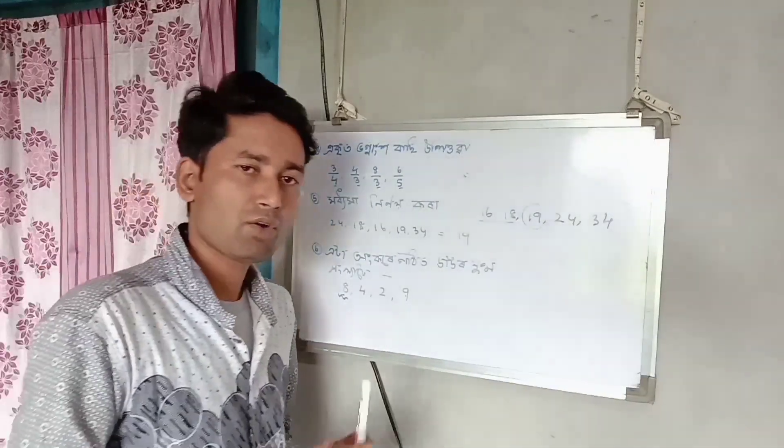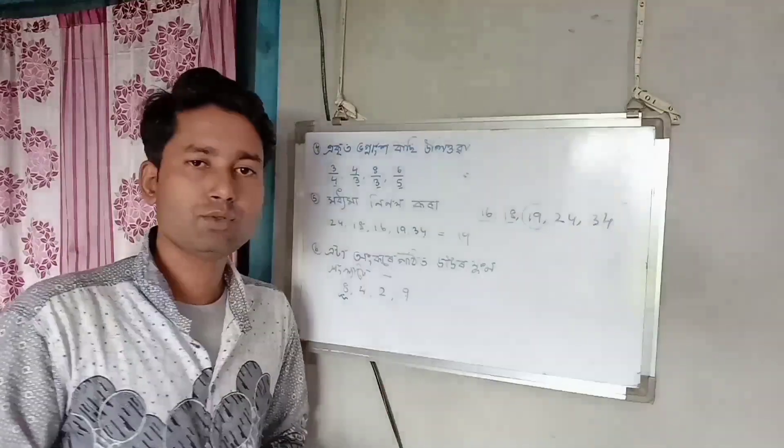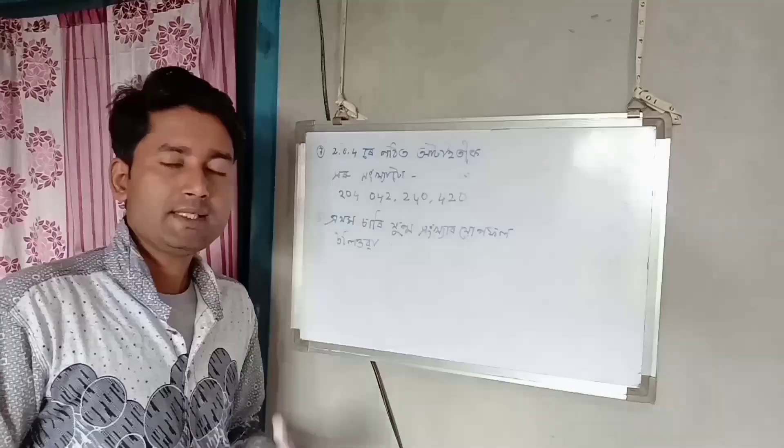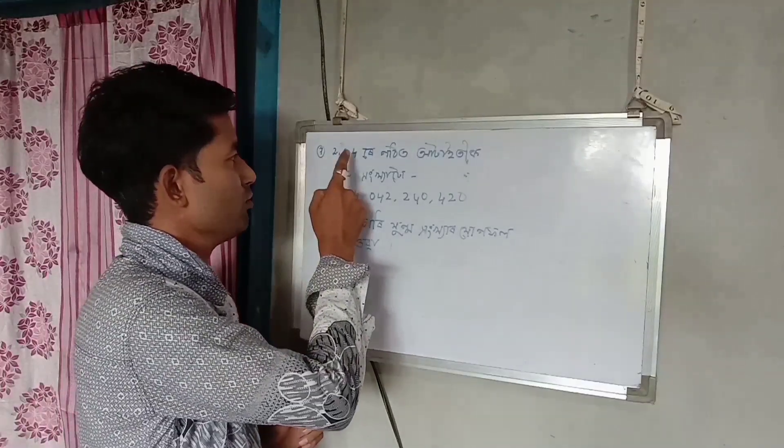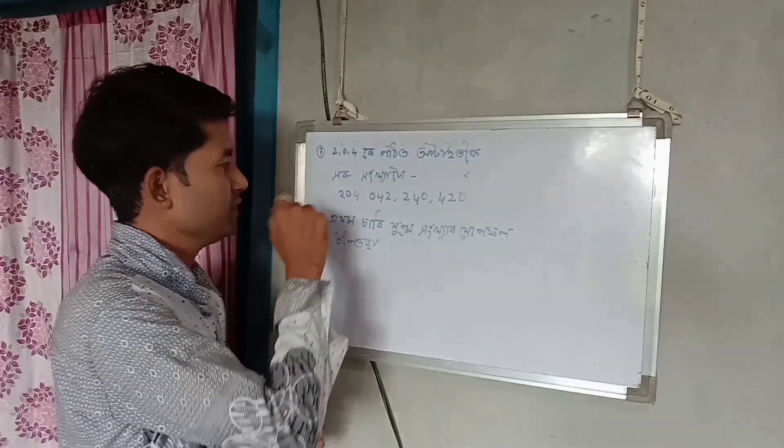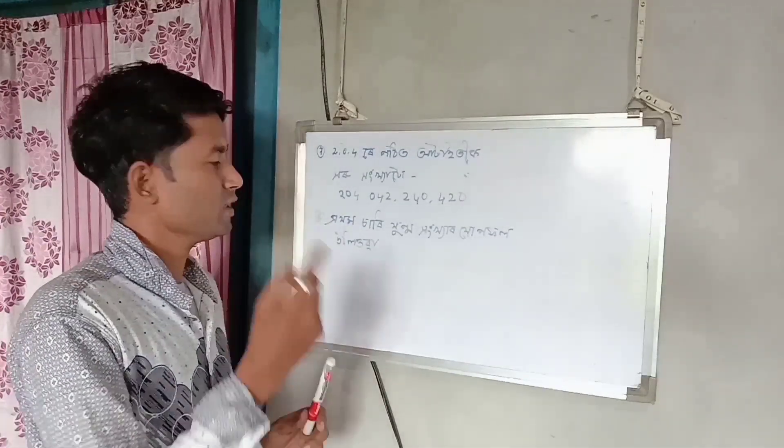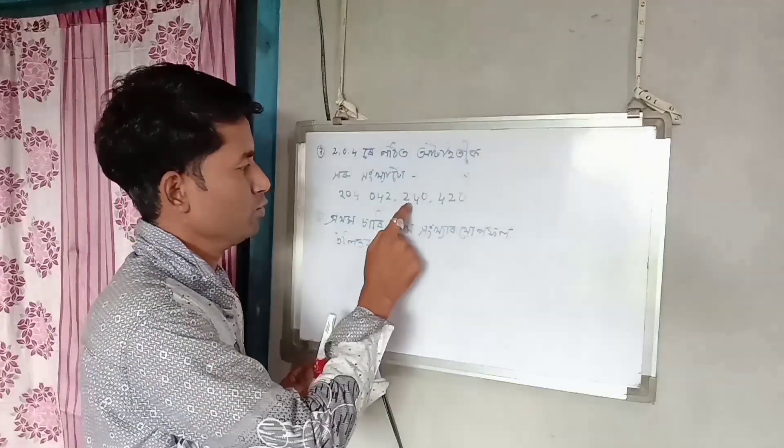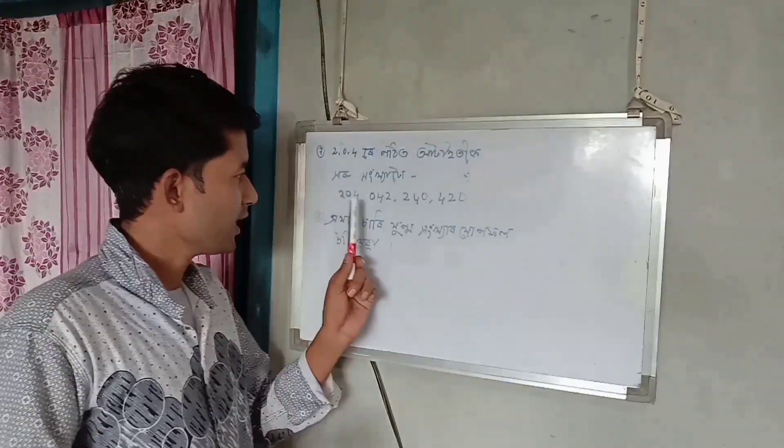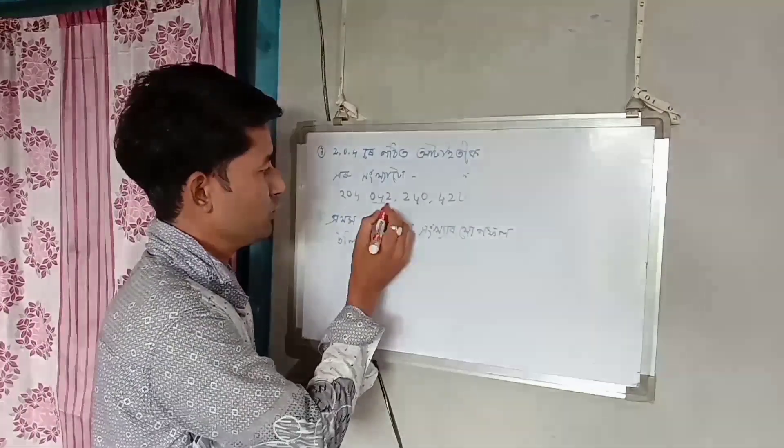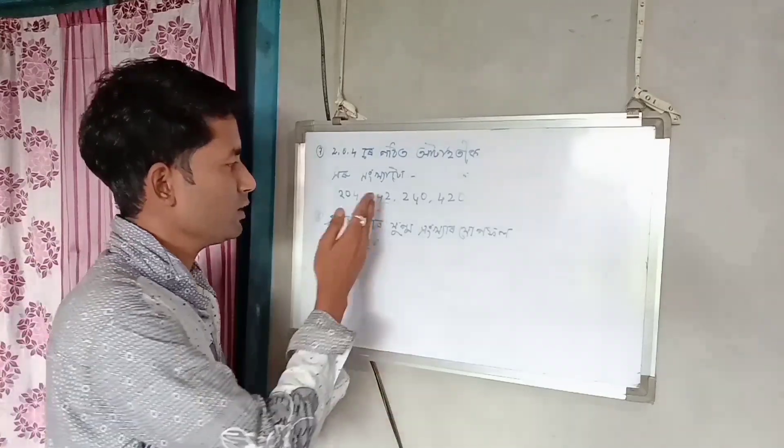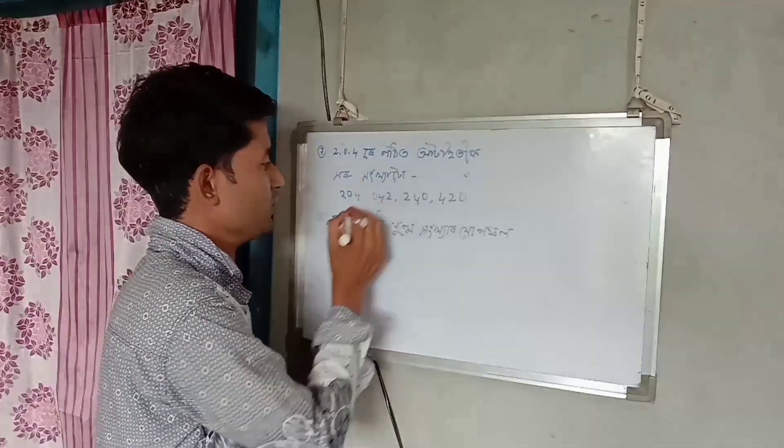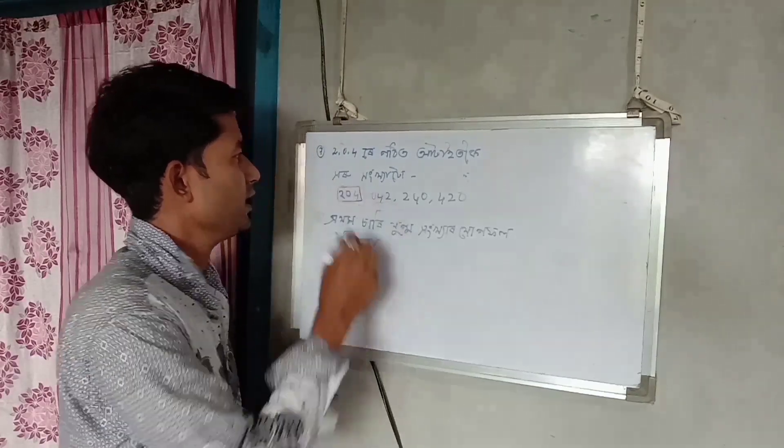Let's move on to the next question. The options are 204, 042, and 420. What is the answer? The answer is 204, so option 2 or 204 is correct.